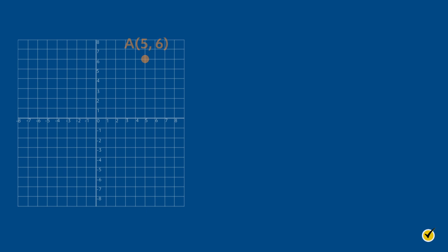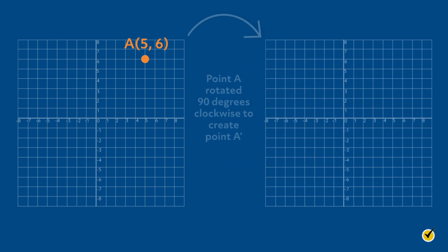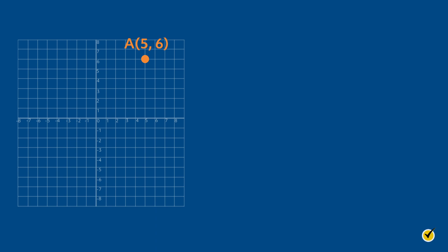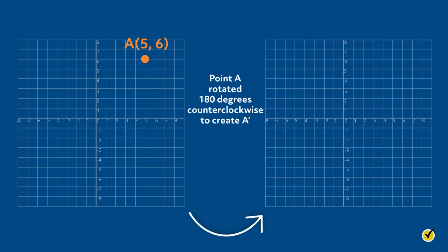Let's look at a real example. Here we plotted point A at (5, 6). Then we rotated the paper 90 degrees clockwise to create point A', which is at (6, -5). Here is the same point A at (5, 6) rotated 180 degrees counterclockwise about the origin to get A' at (-5, -6).